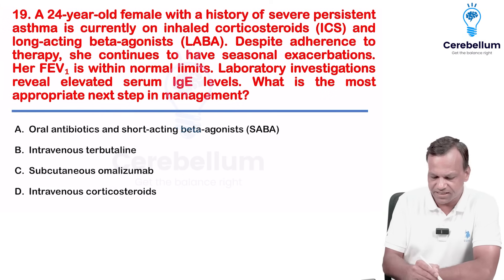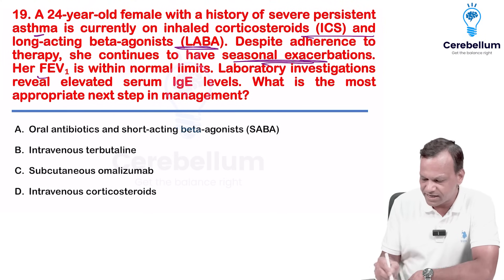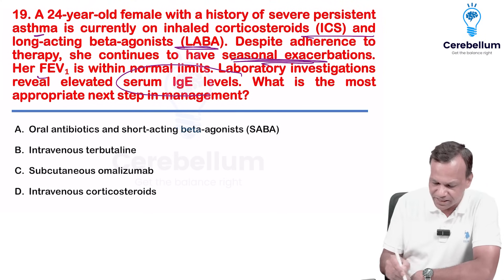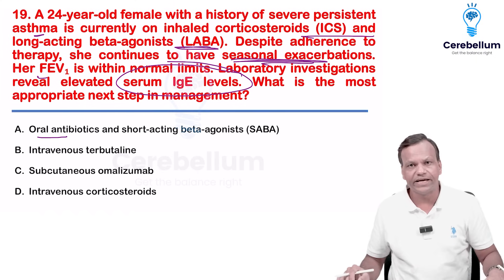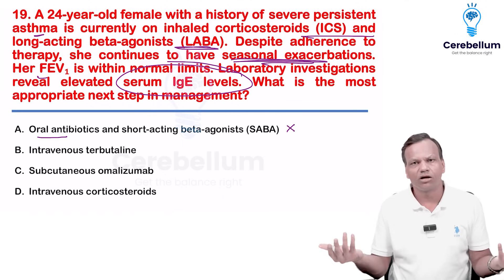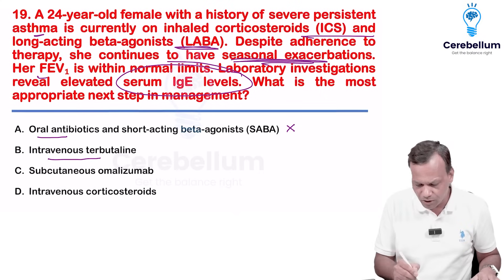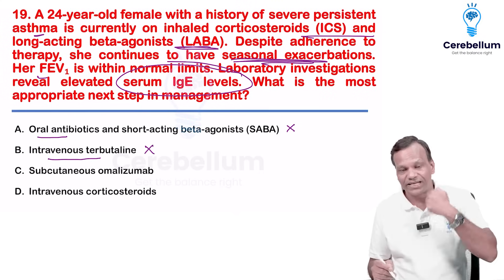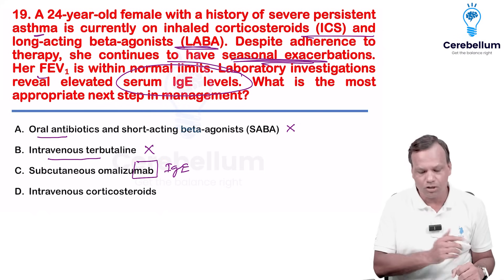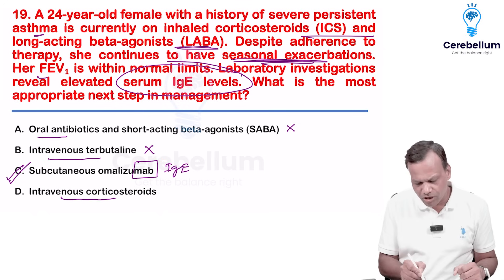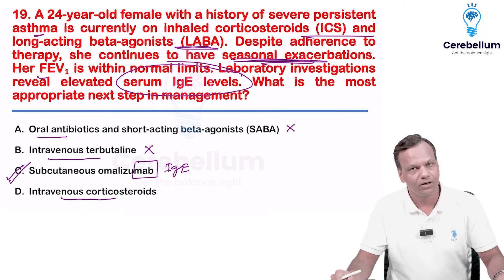A patient has severe persistent asthma, currently on inhaled corticosteroid and LABA, with seasonal exacerbations despite adherence. IgE level is raised. Oral antibiotics are not indicated — no infection. IV terbutaline is not appropriate here. Subcutaneous omalizumab is a monoclonal antibody against IgE, and IgE levels are raised, making this the best answer. IV corticosteroids are used only in status asthmaticus. The answer is subcutaneous omalizumab.